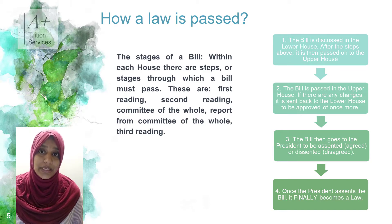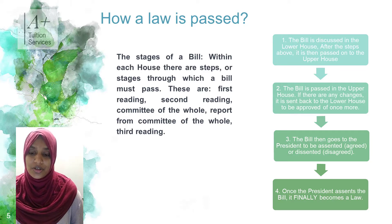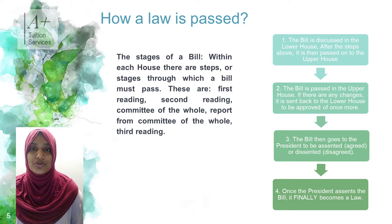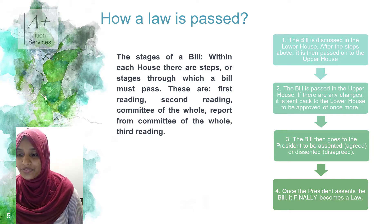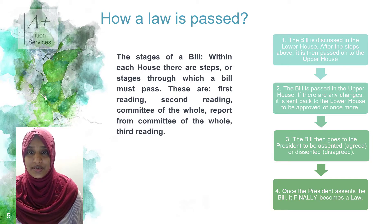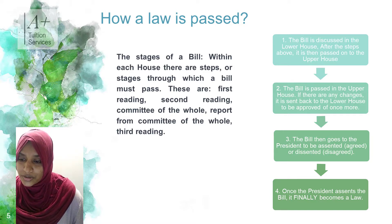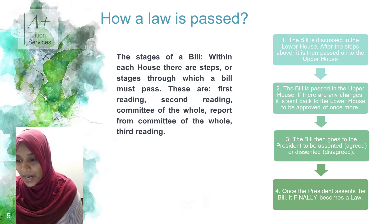The law starts off with a bill, and once the bill is passed it becomes a law. Within each house there are stages through which a bill must pass: first reading, second reading, committee of the whole, report from committee of the whole, and a third reading. The bill goes through three readings for each person or body to scrutinize and ensure that it makes sense. The first step in passing a law is the bill is discussed in the lower house, after which it is passed on to the upper house.